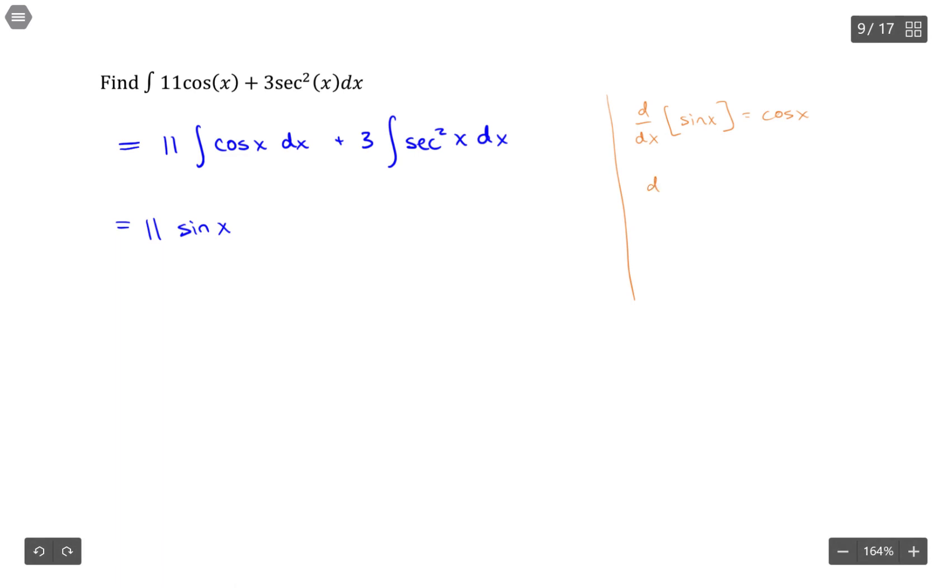If you'll recall about secant squared, the derivative with respect to x of tangent was secant squared x. That means the antiderivative of secant squared is tangent.